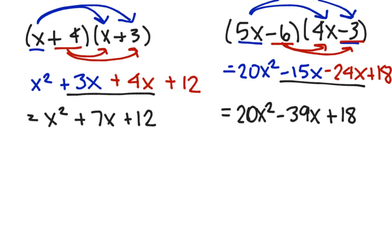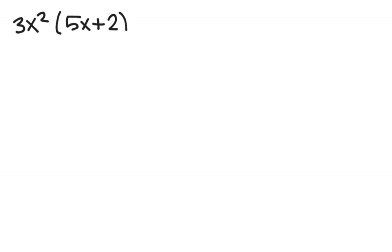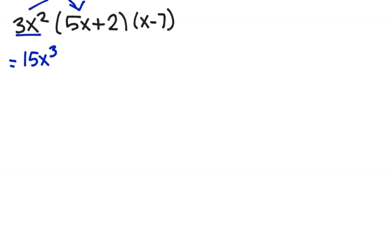We do not always have two terms multiplied times each other — sometimes we have three terms. For example, we might have 3x squared times the quantity 5x plus 2 times the quantity x minus 7. In this case we have to do two sets of distributions. We're going to first distribute the 3x squared into the first parentheses: 3x squared times 5x gives 15x cubed. Remember, you are adding the powers of 2 and 1 to get 3.